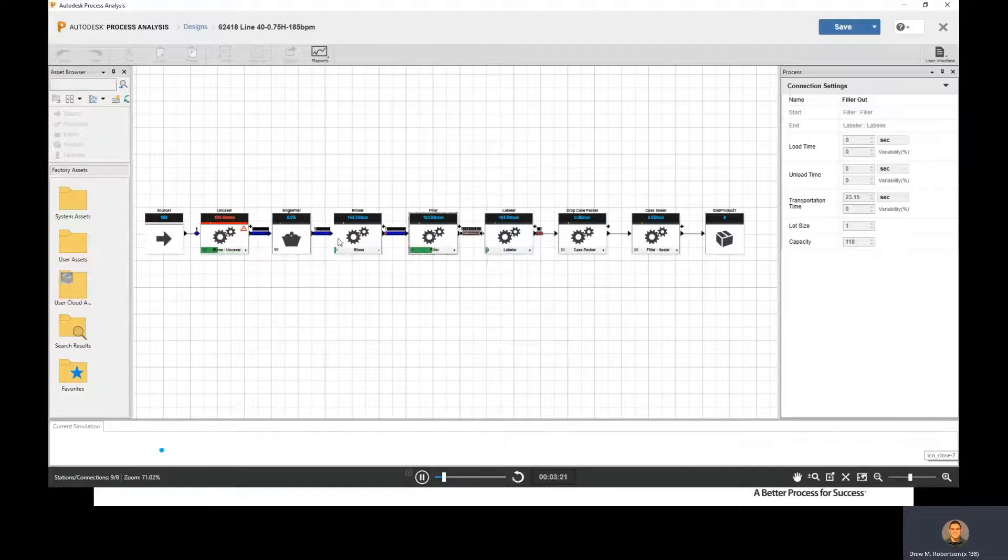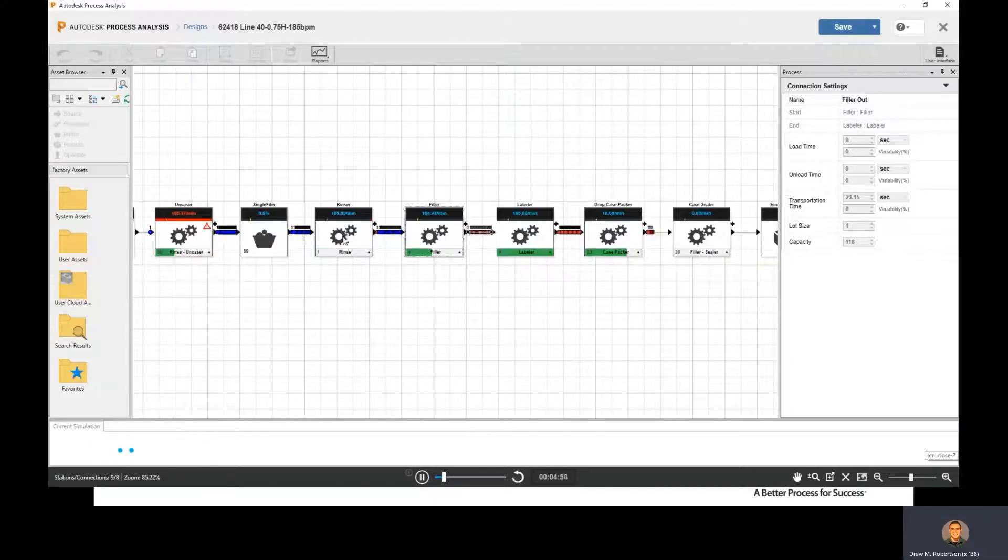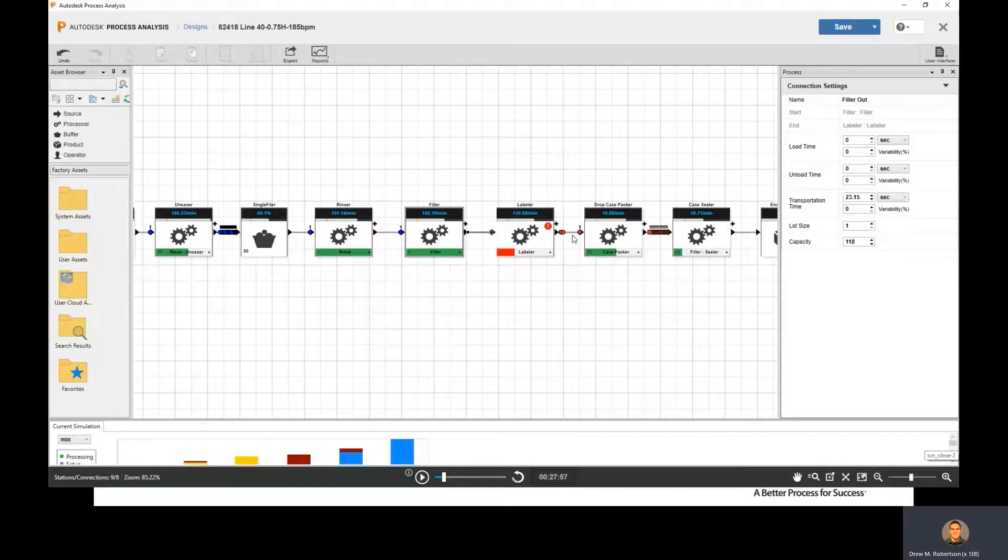Just a quick preview of what the simulation looks like. When we run the simulation, it's putting in blue dots to represent the empty bottles coming in. They get filled, labels added, and then go to the drop case packer. As this is running, we'll see some of them come up with little red stop signs that mean there was an issue at that piece of equipment. So it's down, not producing any bottles. The stuff downstream may start to see a lack of bottles, and the stuff upstream may see blocked bottles.